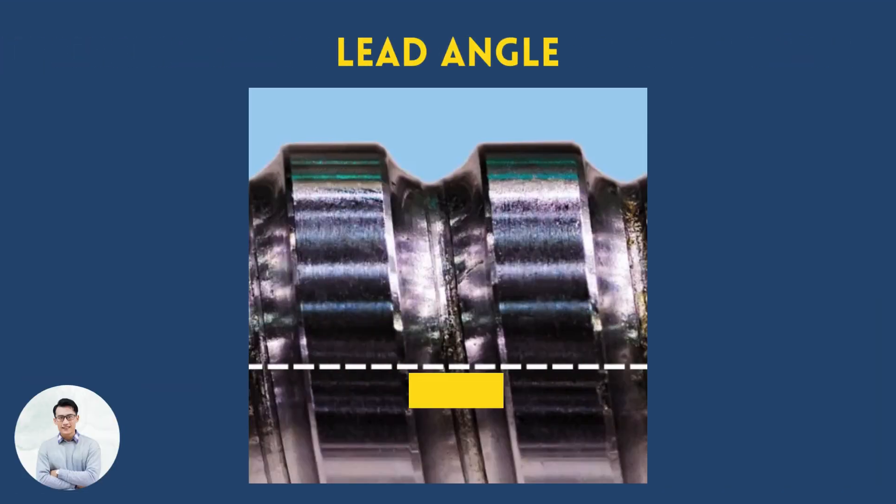When machining a thread, the best practice is to tilt the cutting edge by the lead angle size. It ensures symmetrical relief on both sides of the cut.